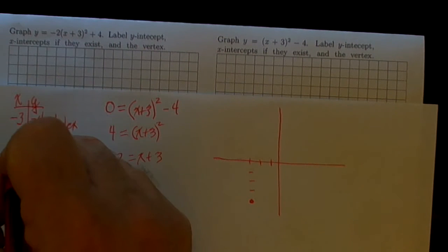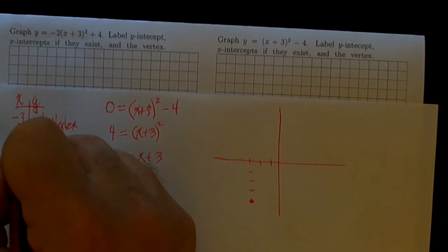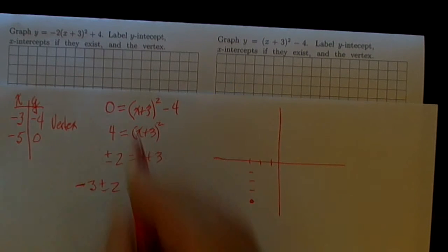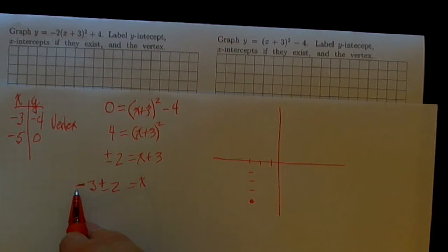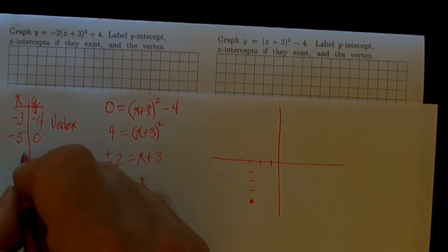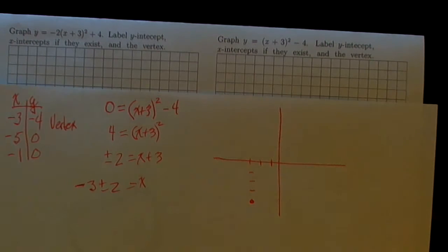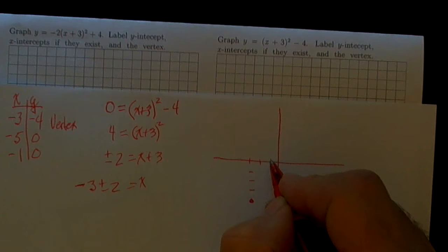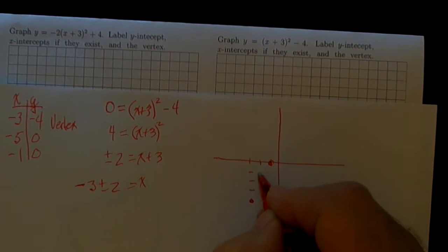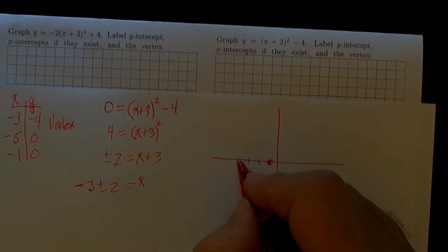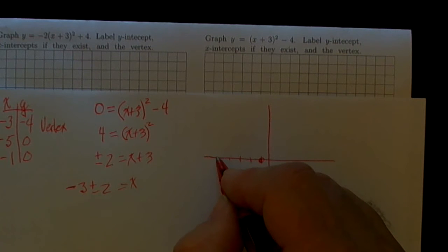That's going to give me x = -5 and y = 0, and x = -3 + 2 = -1 and y = 0. So if you look at those, there's the (-1, 0) and -1, -2, -3, -4, -5.